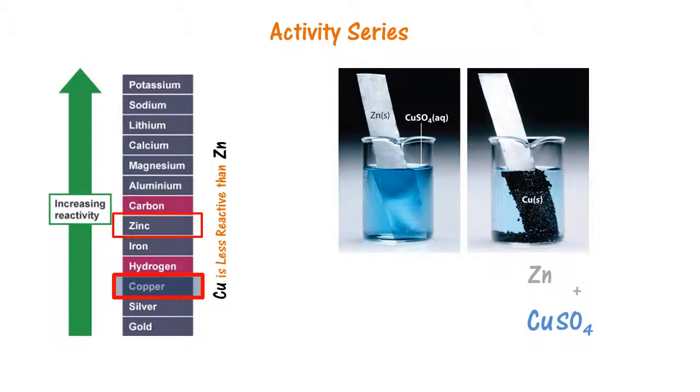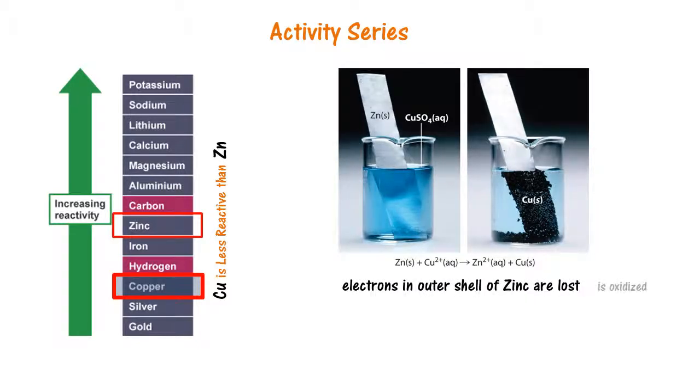Copper is less reactive than zinc, so zinc ions replace copper in copper sulfate. Thus, copper gets deposited on the zinc strip. Zinc loses electrons and is oxidized. Elements at the top of the reactivity series are more easily oxidized, or in other words, have high reduction potential.